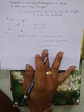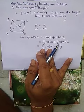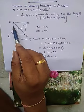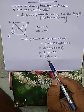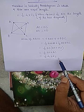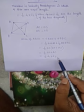So, our formula comes. So, area of the rhombus ABCD is equal to half of product of length of the two diagonals. Thank you.